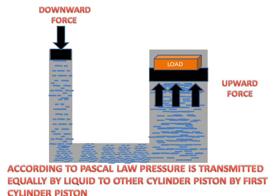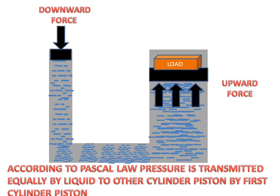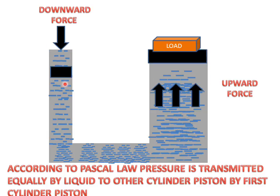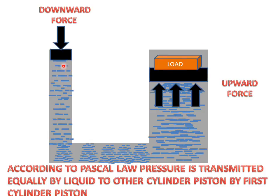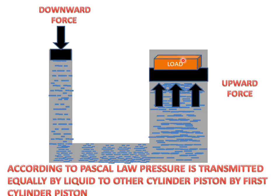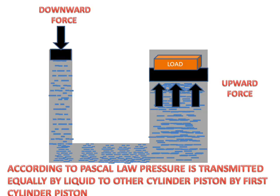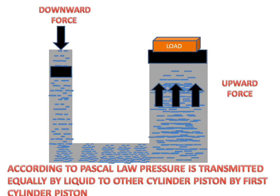The load will move upward by the action of the first cylinder piston. This first cylinder piston will go downward, and by an equal amount, the second cylinder piston will go upward, which will carry the load. This is the principle of the hydraulic lift.